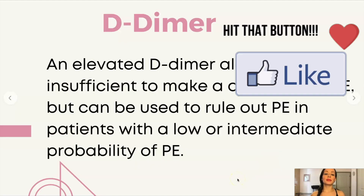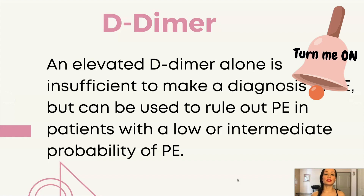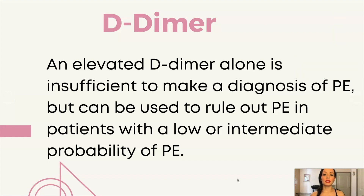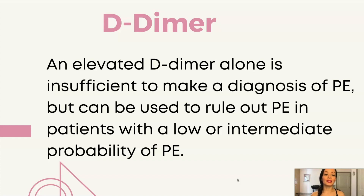An elevated D-dimer alone is insufficient to make a diagnosis of pulmonary embolus. The D-dimer can give a lot of false positives — it is sensitive but has a low specificity. What that means is if you have a blood clot, your D-dimer will usually be elevated, but it also produces many false positives. It can be used to rule out a pulmonary embolus in patients with a low or intermediate probability of PE.